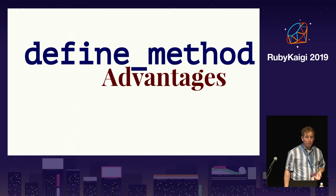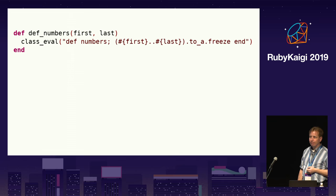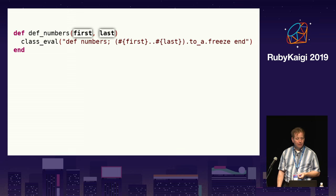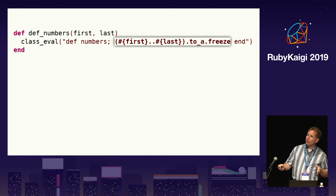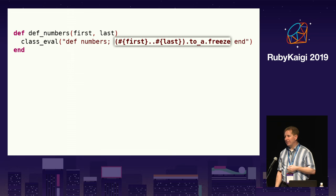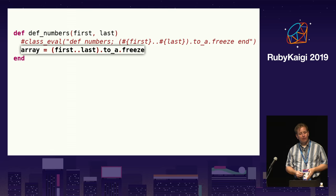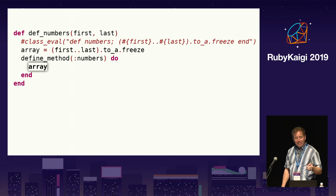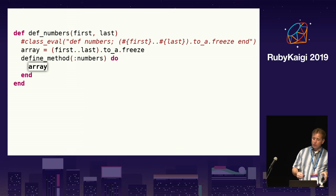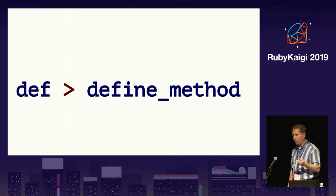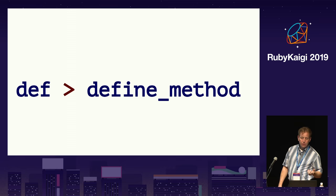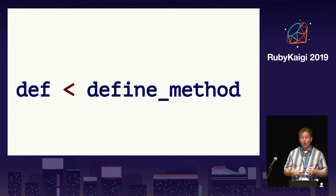However, there is one case where define_method is preferred for performance. Assume you have a class method that defines an instance method taking two integer arguments and returns a frozen array created from a range between the two arguments. The performance issue with using class_eval and def is that every time the numbers method is called, it needs to recompute that array. It's faster to compute the array up front and then use define_method to define the instance method — the instance method can return the array that was created when the class method was called, which is much faster than recomputing it. So: prefer def over define_method for defining methods as those methods are faster to call, unless you can access local variables in the surrounding scope to avoid computation inside the method.